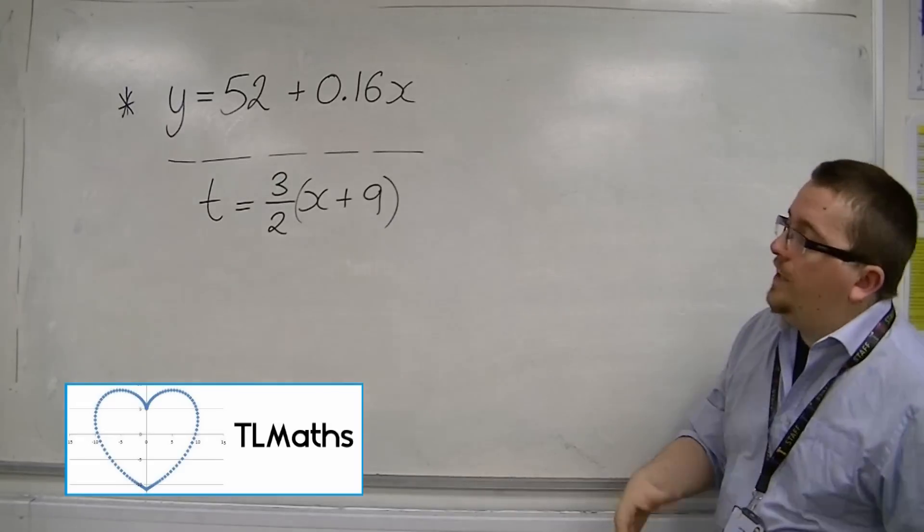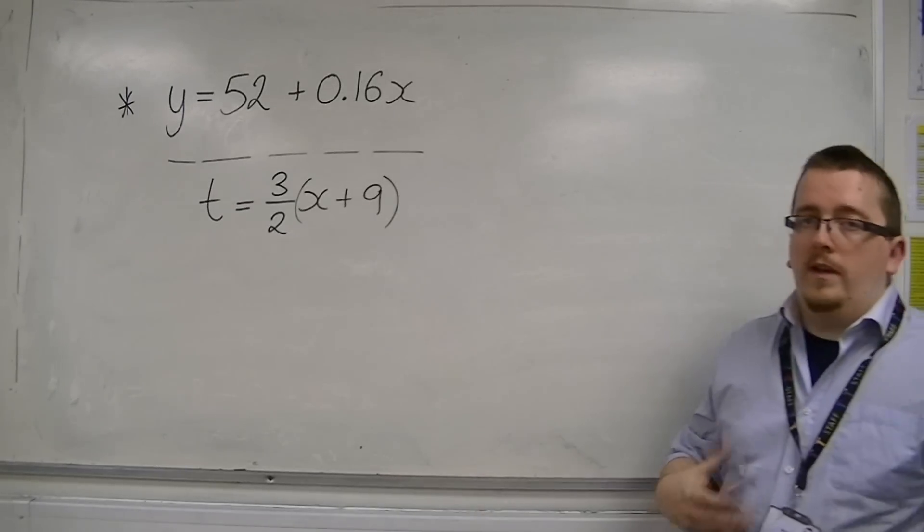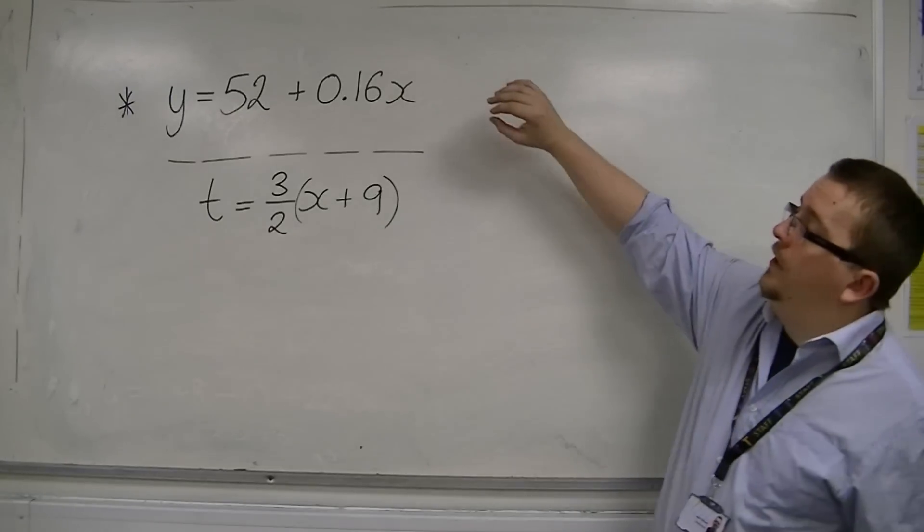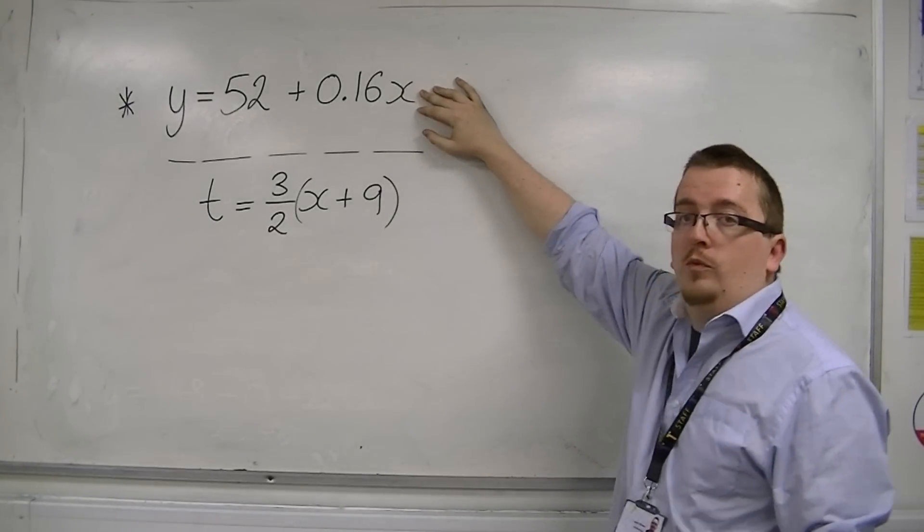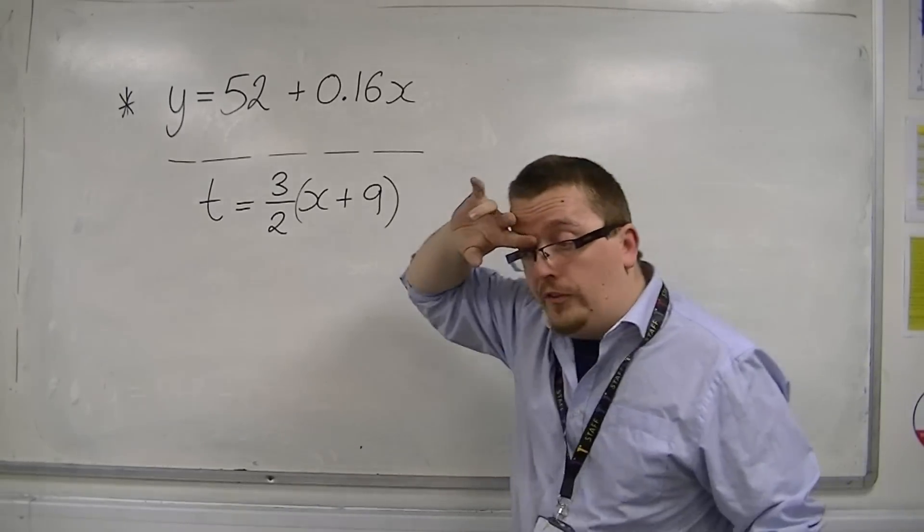In this video I want to show you how we deal with scaling when we're doing a linear regression. Let's say we found the least squares regression line to be y equals 52 plus 0.16x. And then what we're going to do is we're going to change the scaling.